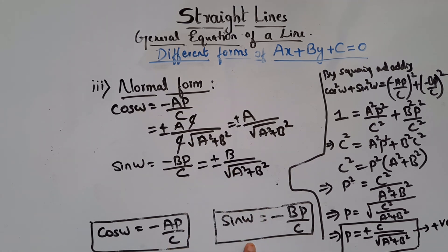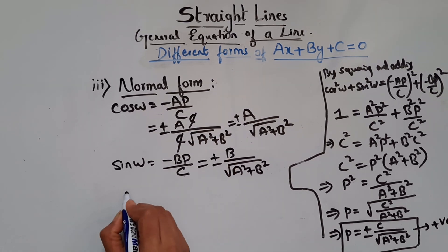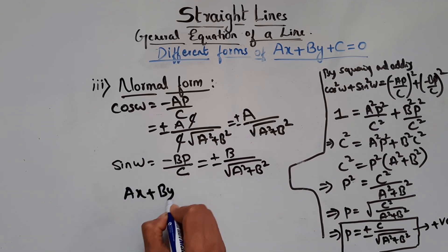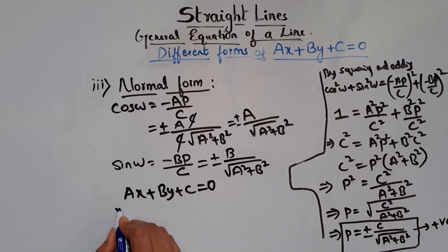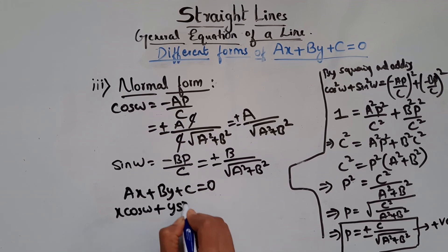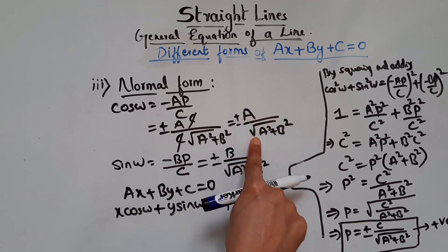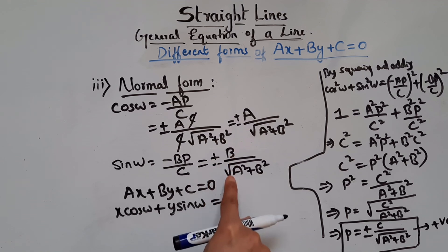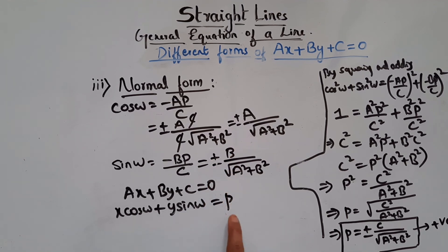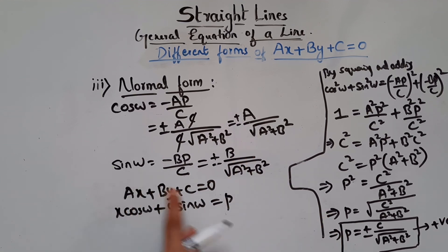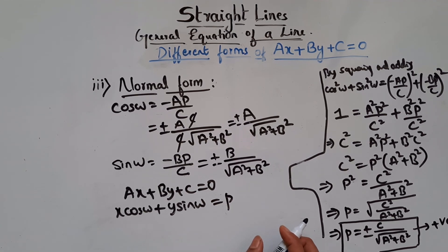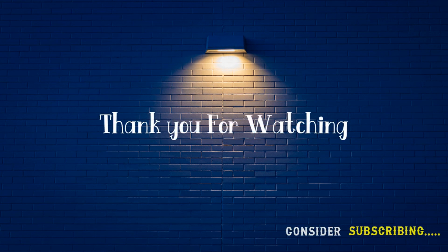To summarize the normal form: given AX plus BY plus C equals 0, we have cos ω equals plus or minus A over square root of A² plus B², sin ω equals plus or minus B over square root of A² plus B², and p equals C over square root of A² plus B². Using these, we can find the values of ω and p. I hope this is clear. See you soon — take care.